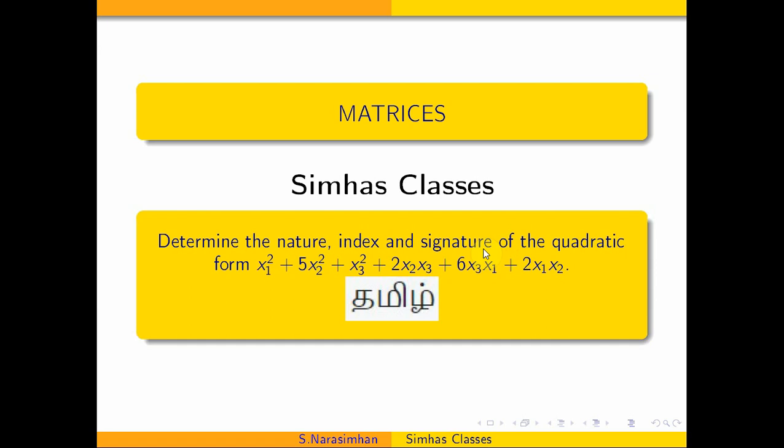Hi students, welcome to CMOS classes. One quadratic form is nature, index, signature. Let's talk about an example.